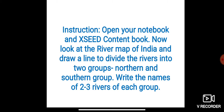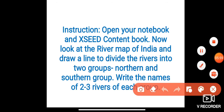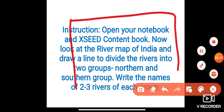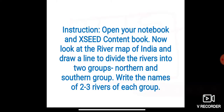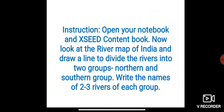Here are the instructions: open your notebook and exit content book. Look at the river map of India and draw a line to divide the rivers into two groups — northern and southern. In your notebook, make two columns: write North and South, and accordingly write the names of two or three rivers of each group.